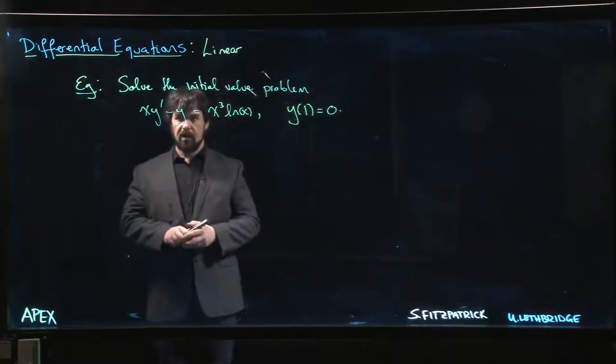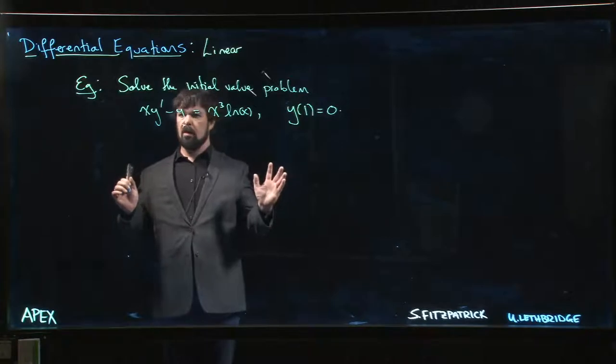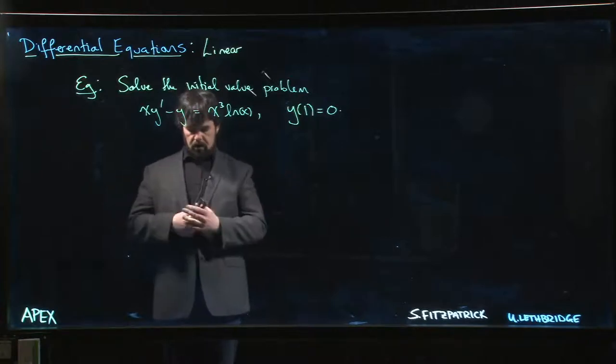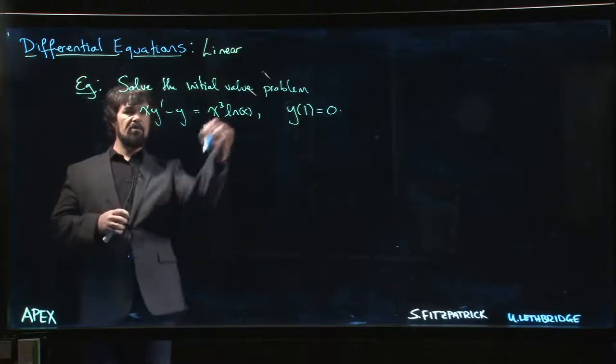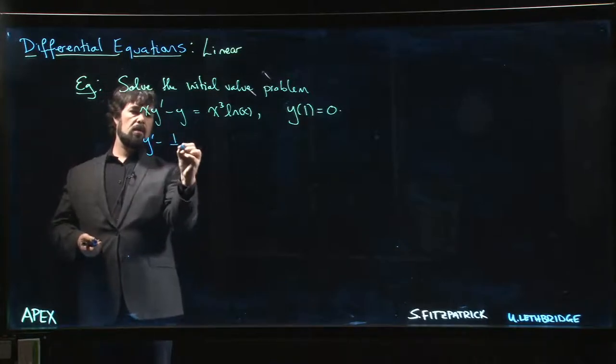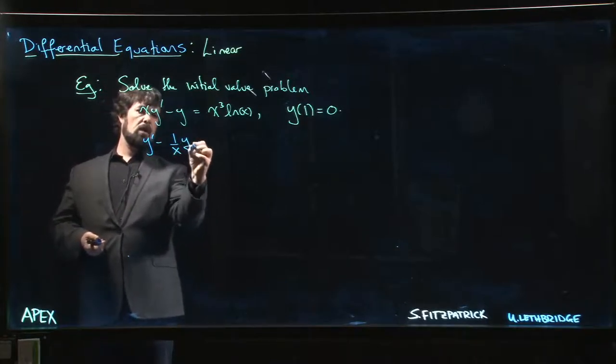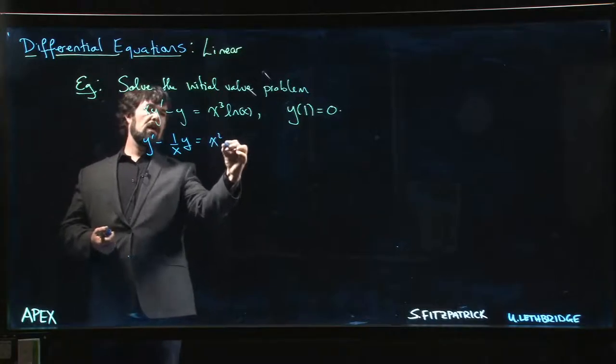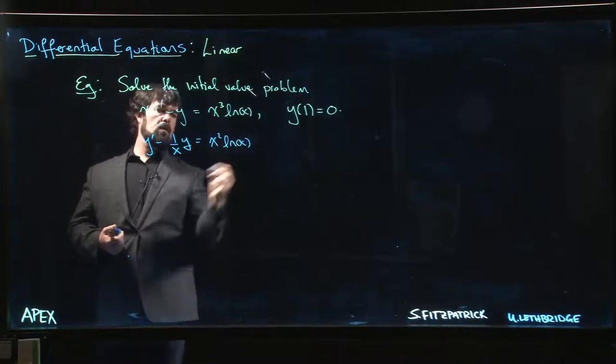This time we're looking at an initial value problem. The equation we have is not quite in the form of a linear equation, but if we divide by x, we have y' - (1/x)y = x²log x.